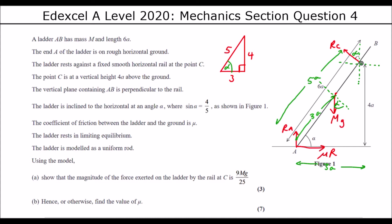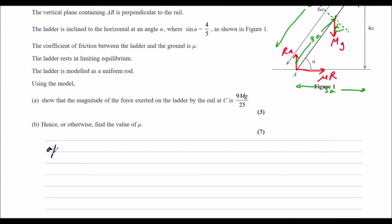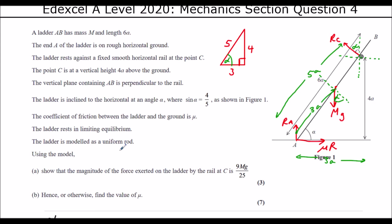So using the model, show that the magnitude of the force exerted on the ladder by the rail at C, so the normal reaction at C, is nine mg over 25. So in these questions, we can either take moments about any of the points. So we could take moments about A or C or the center. And then it would be clockwise moments equal anti-clockwise moments. Or we could use forces up equal forces down and forces left equal forces right.